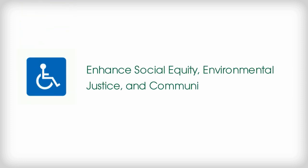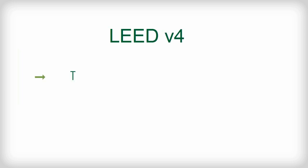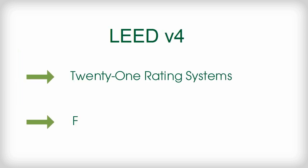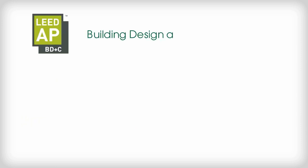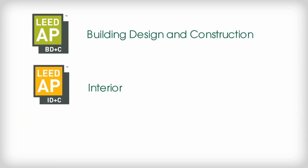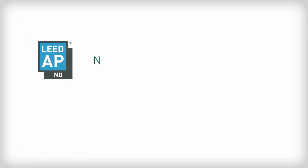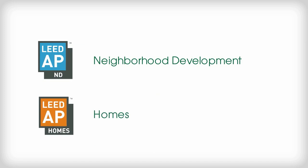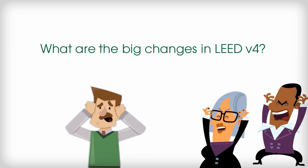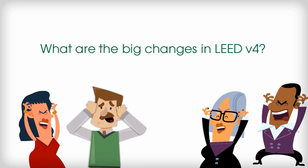There are 21 rating systems under LEED Version 4, divided into five categories: building design and construction, interior design and construction, existing buildings operations and maintenance, neighborhood development, and homes.